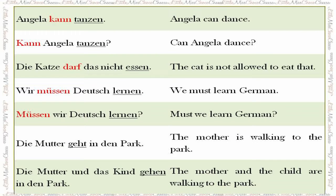Let us hear some of the words we just learned used in sentences. 'Angela kann tanzen' — Angela can dance. Here you have a modal verb, 'kann', and notice that the main verb 'tanzen' is in its infinitive form. 'Kann Angela tanzen?' — Can Angela dance? In this question, the modal verb is in the front position and 'tanzen' is at the end.